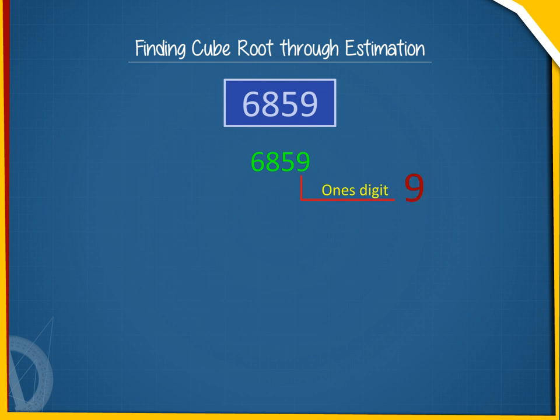So, the ones digit in the cube root of 6859 will also be 9.